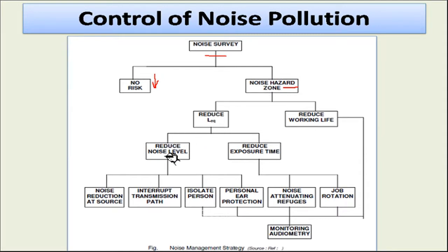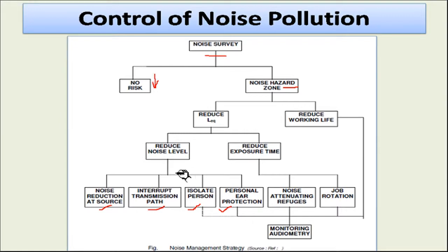You can reduce the L equivalent by reducing the noise level at the source, or you can interrupt the transmission path, or you can isolate the persons from that noise level, or you can provide personal ear protection to persons working in that heavy noise area. These are the ways by which the noise level exposure can be reduced. You can also reduce the exposure time using noise alternating refuges or job rotation.